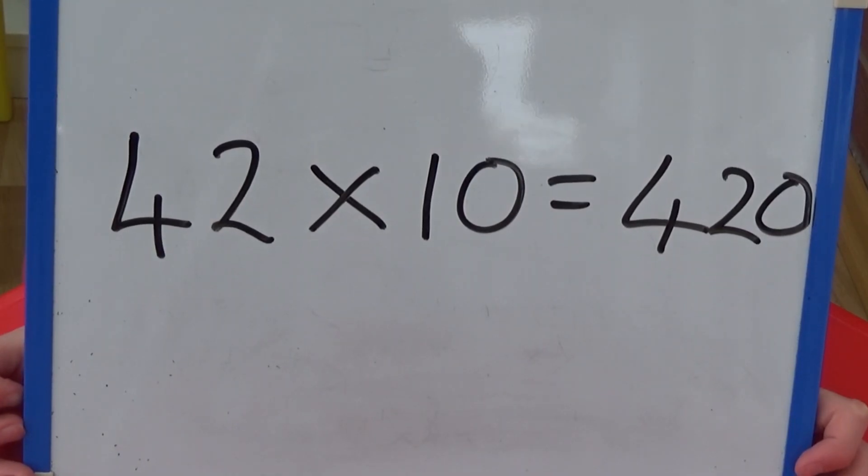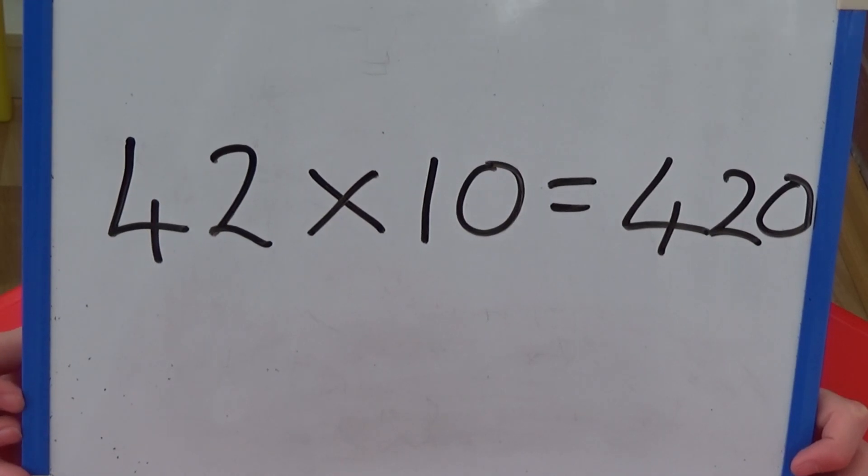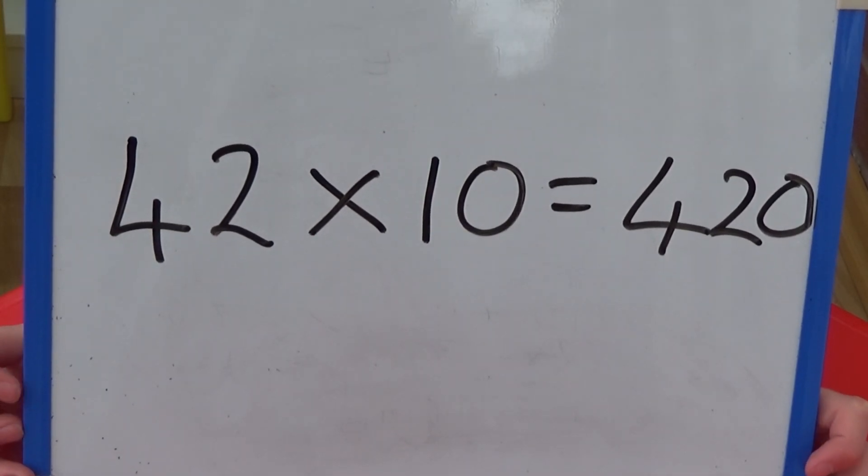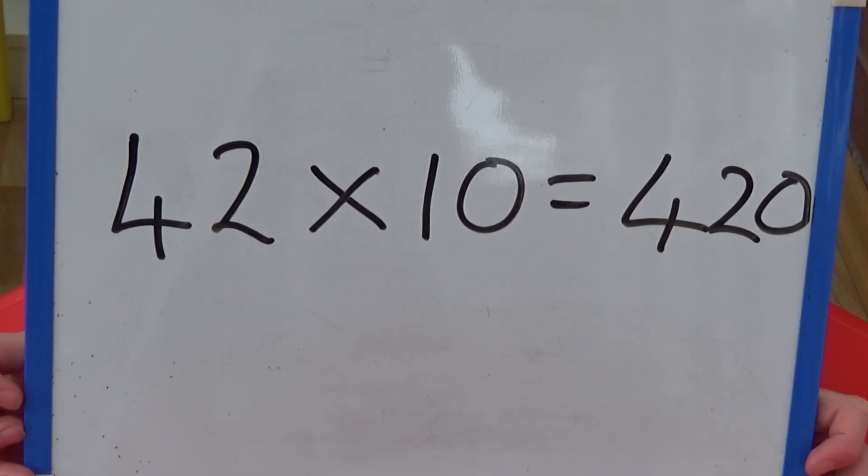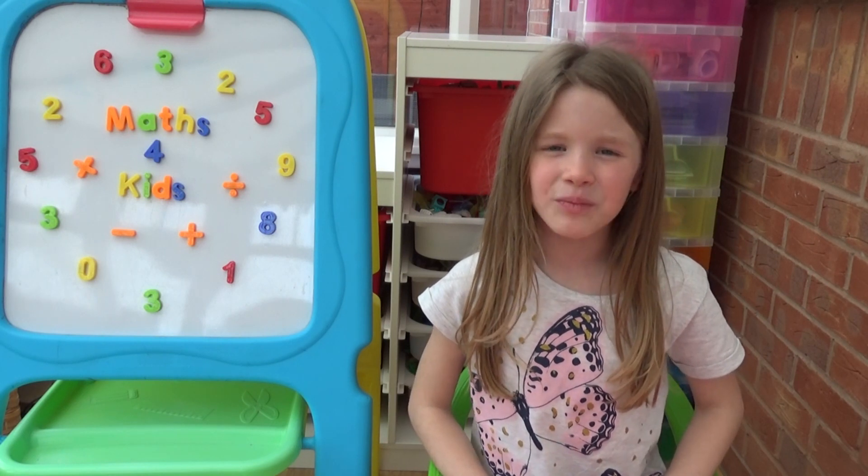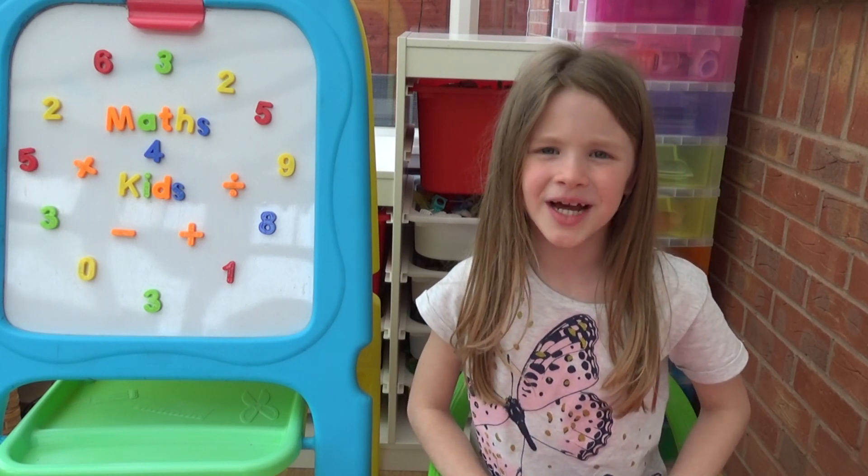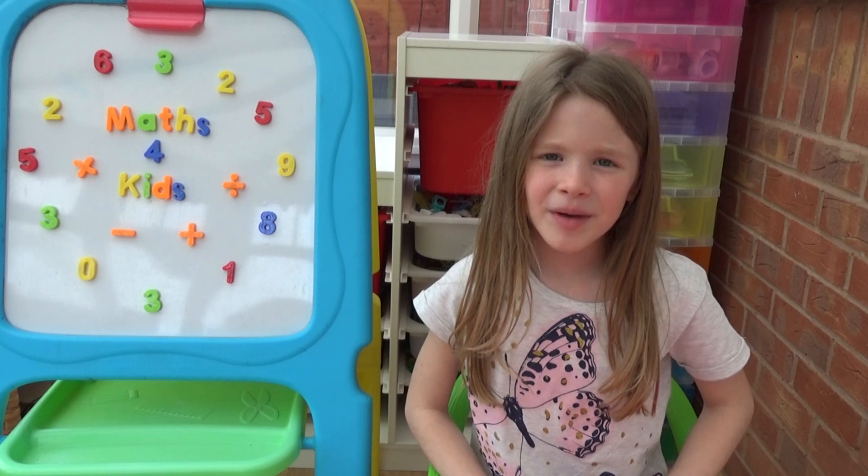We can see from both of these that 42 times 10 equals 420. This time we're going to look at what happens when you multiply a whole number by 100.